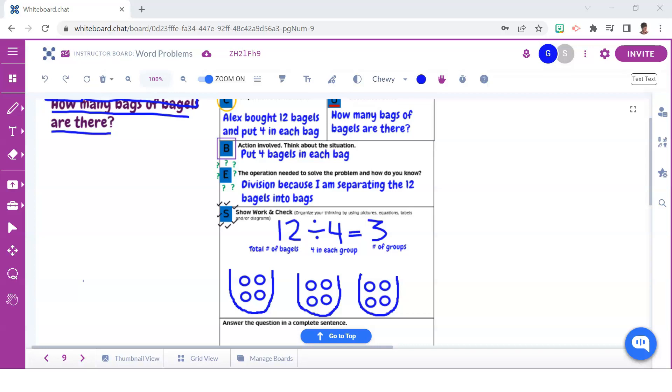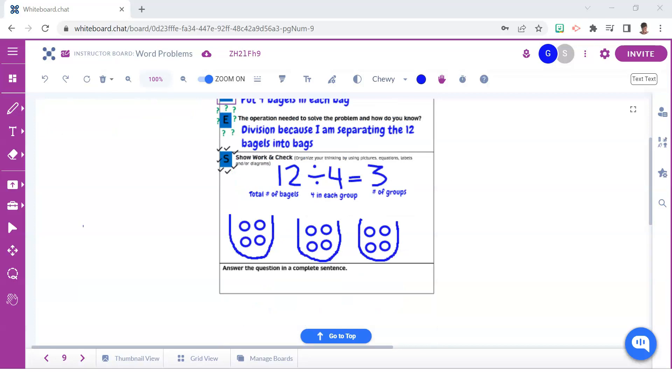In this section also encourage students to develop the habit of labeling their numbers to describe what each number means. This serves as good practice when students respond to extended response questions on standardized tests too. In this last section, students will use this space to answer the question by writing it in a complete sentence here.